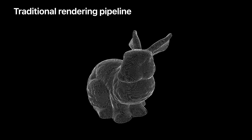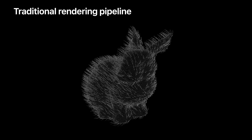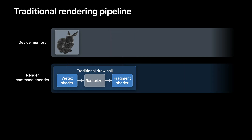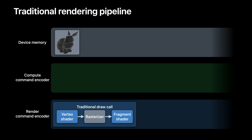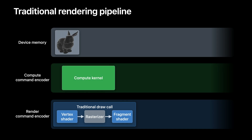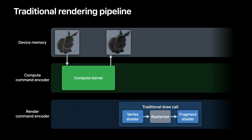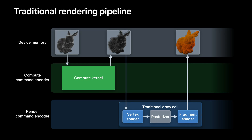Let's step through an example. Imagine you want to generate some procedural geometry on the GPU — for example, adding procedural fur to this bunny. Traditionally, in order to generate procedural geometry, you would also need a compute command encoder to perform a compute kernel dispatch. The compute kernel would take the original mesh as an input, generate procedural geometry, and output it back into device memory. Not only does this approach require two command encoders, it also requires you to allocate additional memory to store the procedural geometry. In case of indirect draw calls or high expansion factors, this memory can be hard to predict. There is also a barrier between the two encoders, serializing work across the GPU.